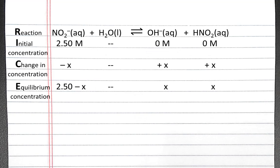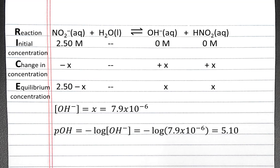Going back to our RICE table, now that we've calculated X, we know the hydroxide concentration. So we can calculate pOH by taking the negative log of the hydroxide concentration, which will be equal to 5.10.